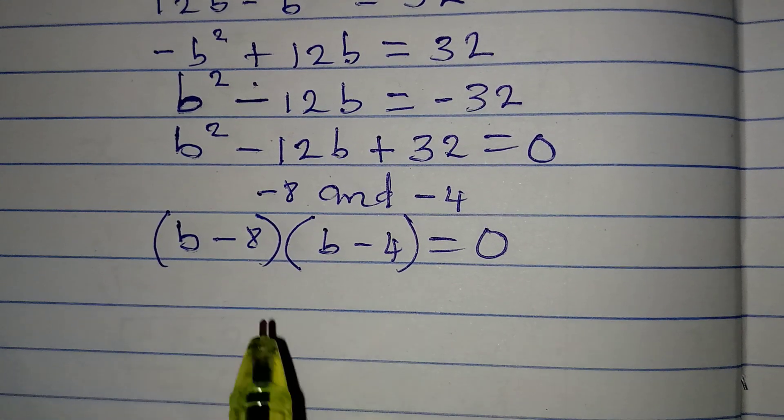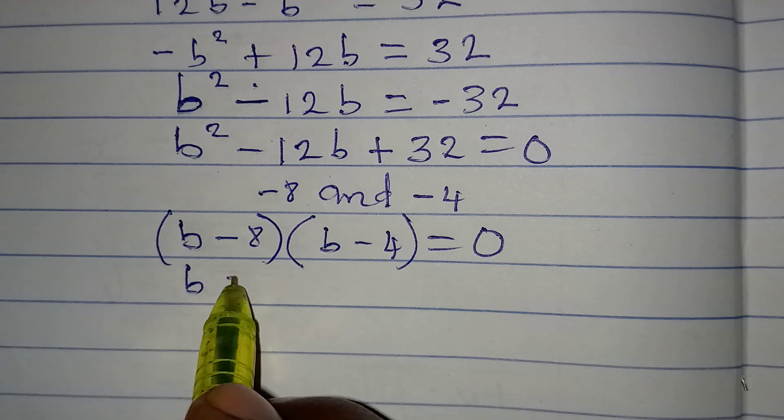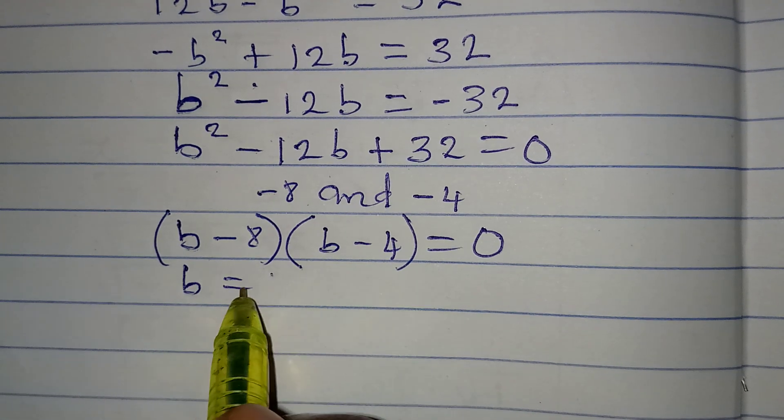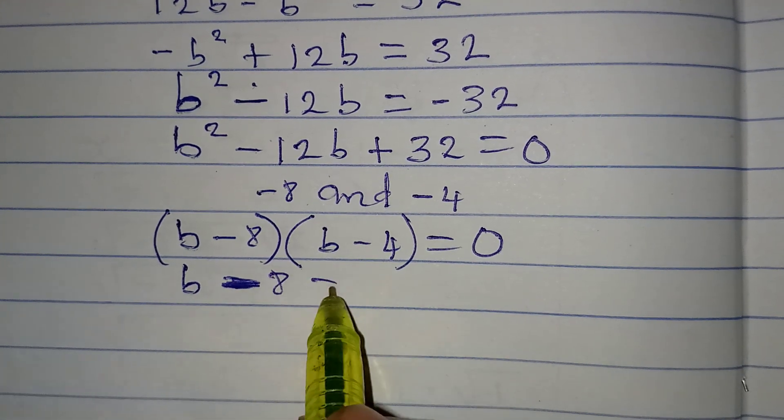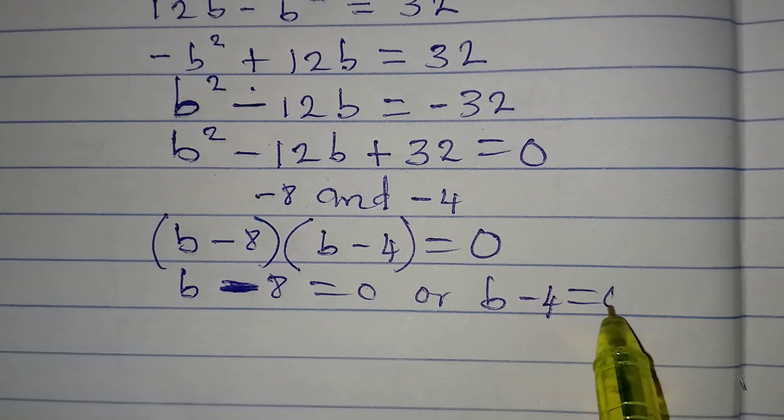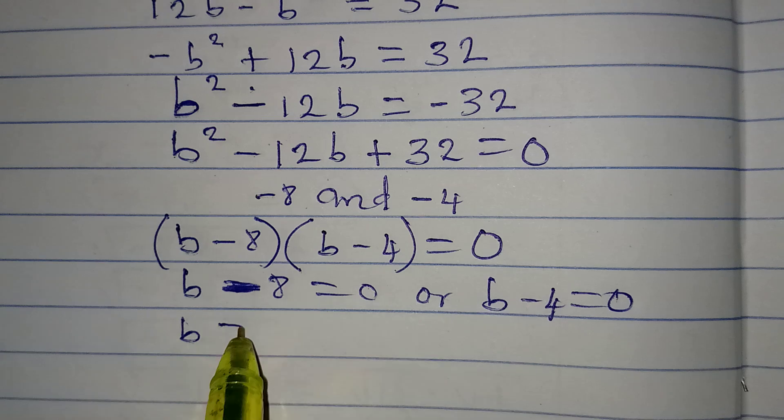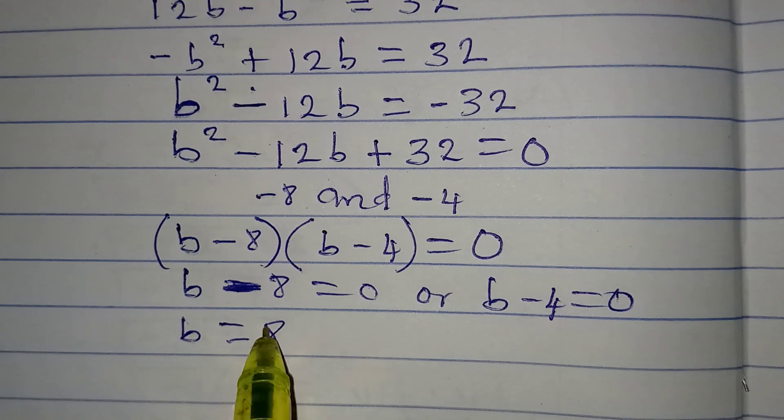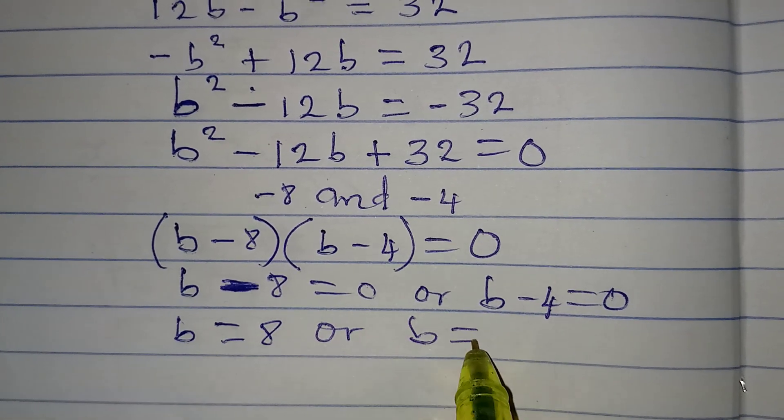Now, let's apply zero product rule, that says B minus 8 is equal to 0, or B minus 4 equals 0. B is equal to 8, or B is equal to 4.